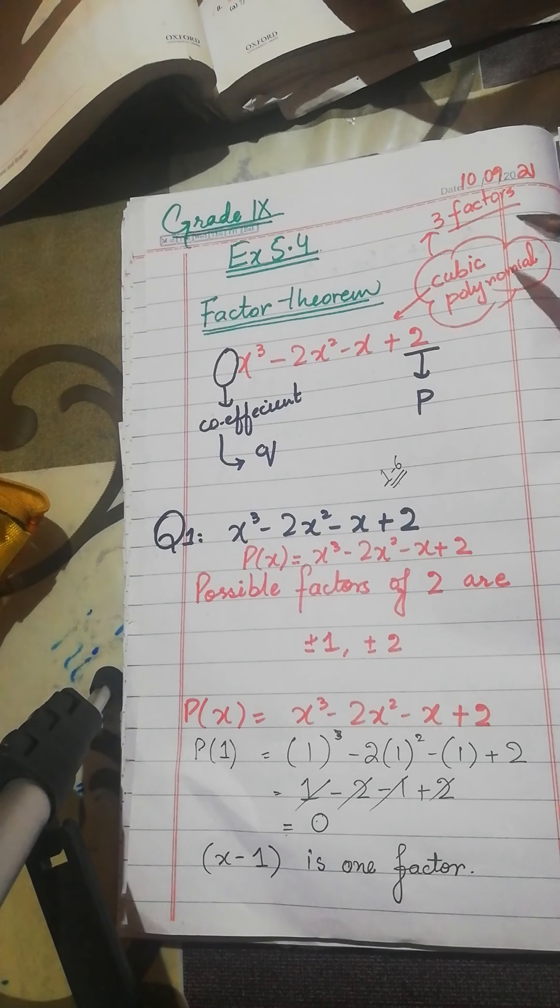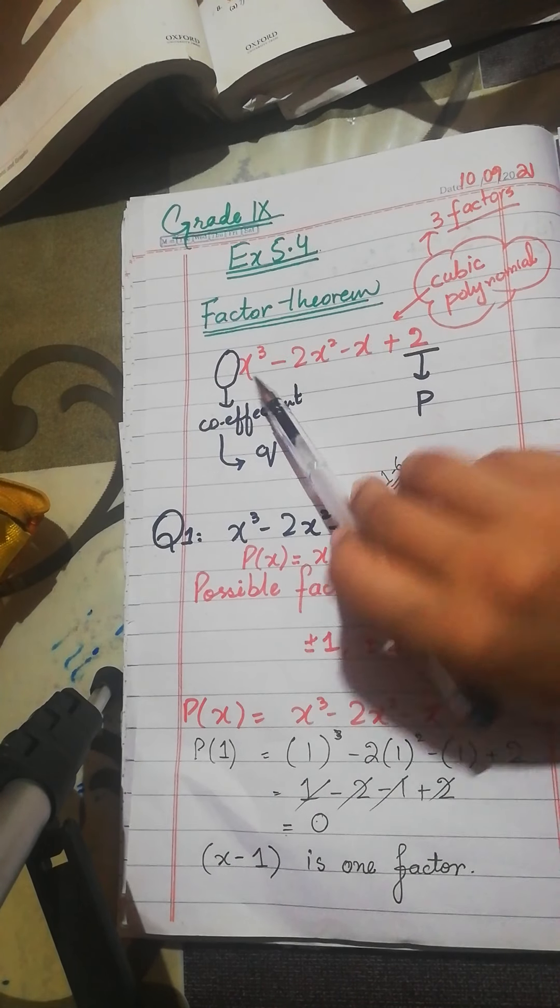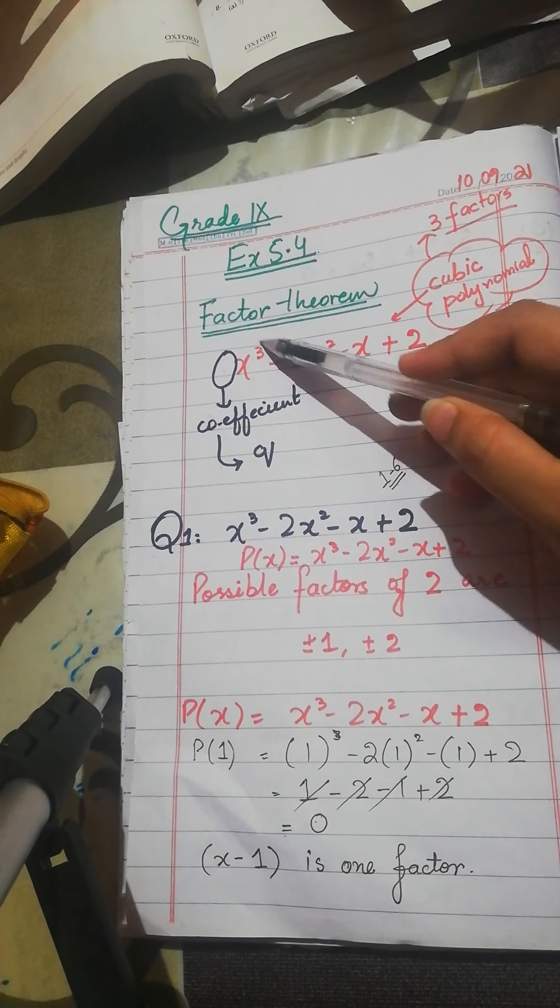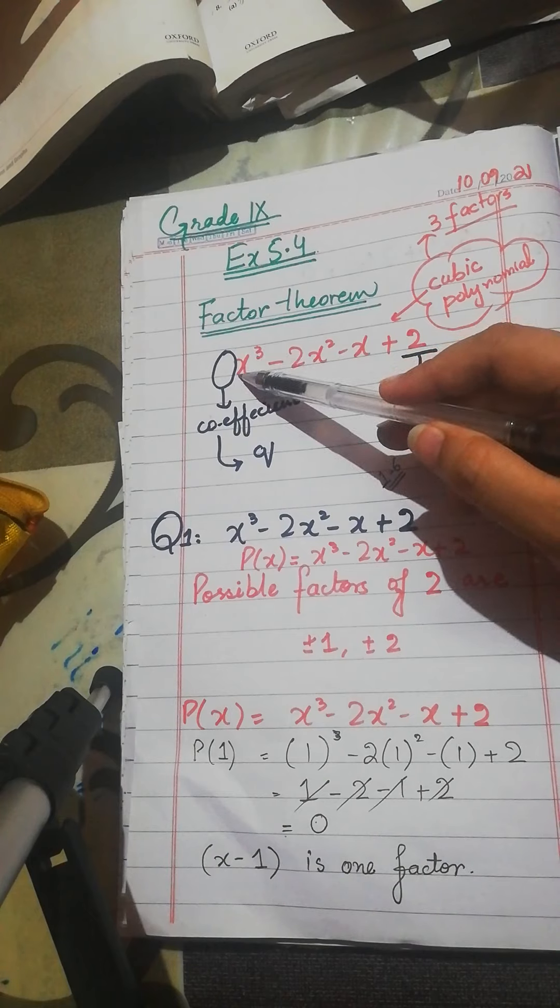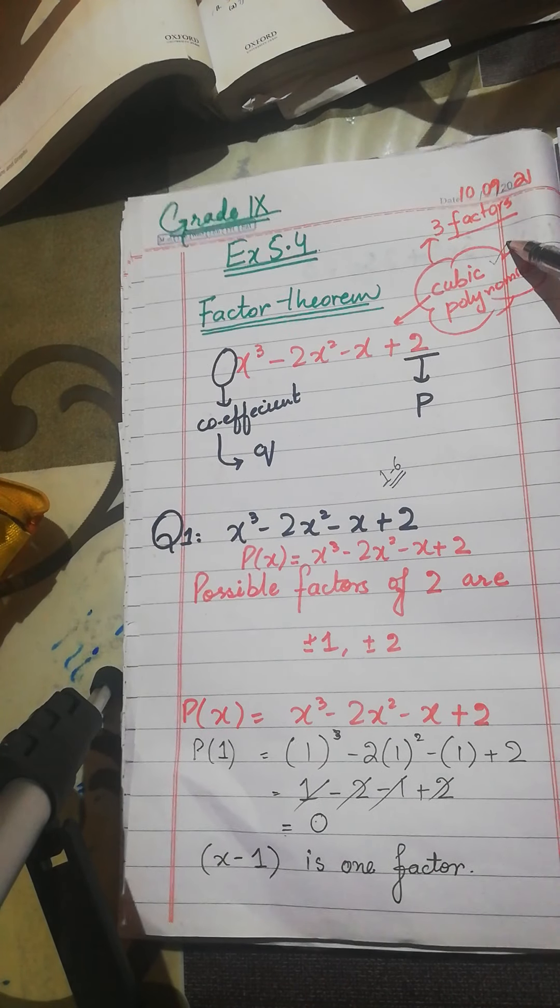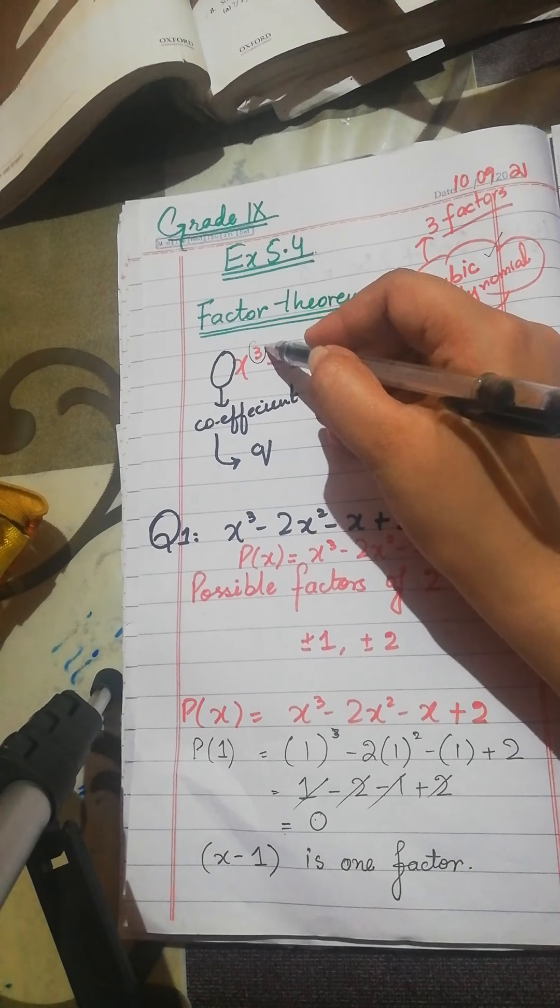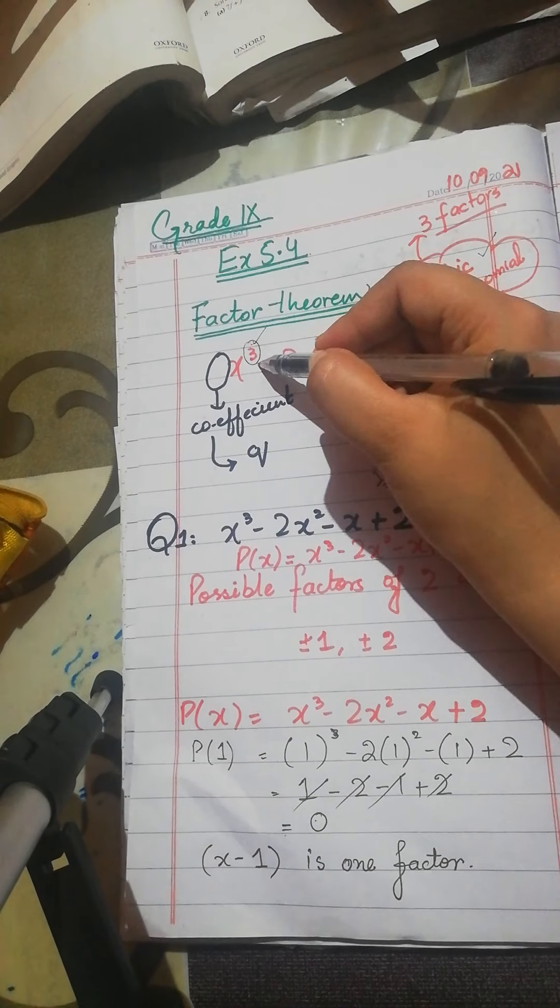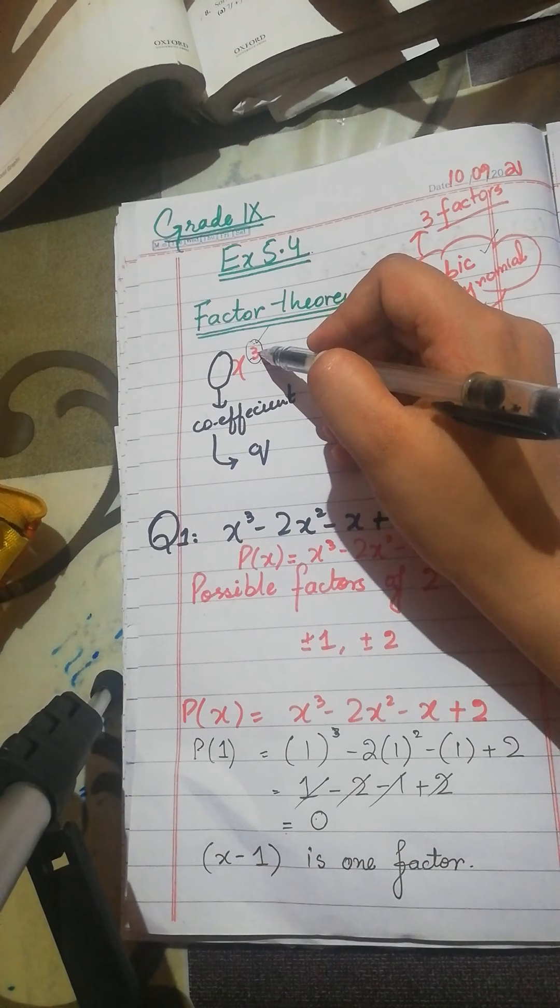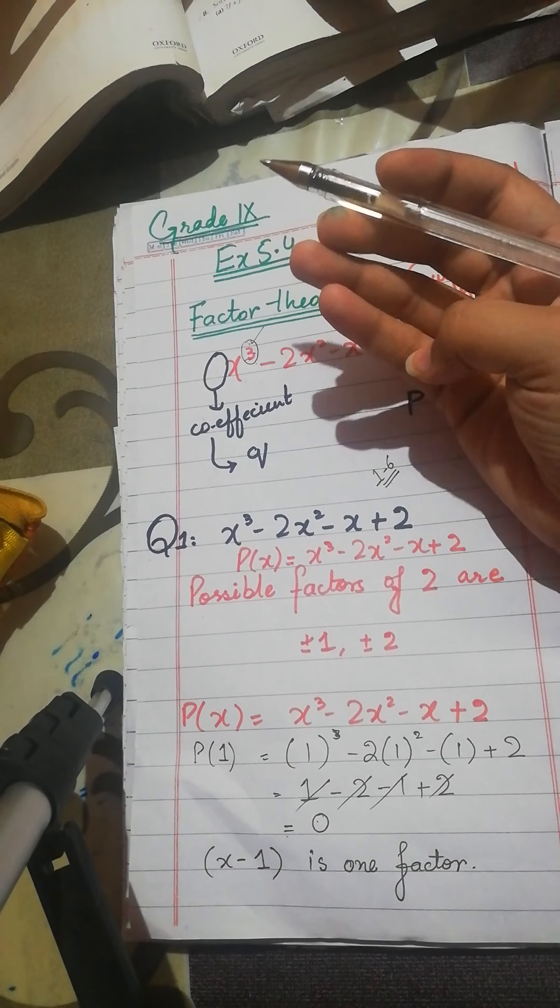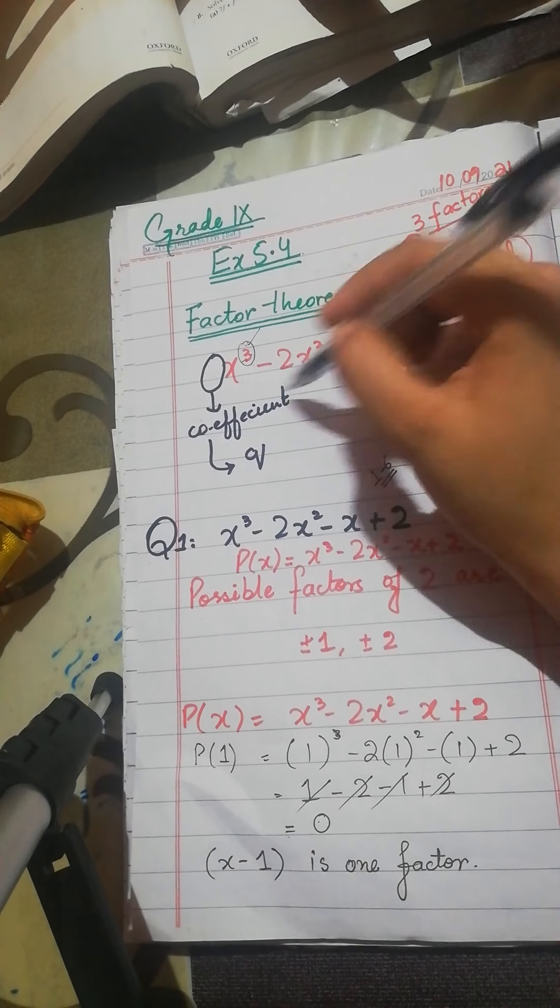In factor theorem, you should know that this is a polynomial. You should know the degree of polynomial. The highest power is 3. It means this is a cubic polynomial. Remember that the degree of polynomial will tell you how many factors there will be. Here it is 3, the highest degree. Now remember that you will find 3 factors in this polynomial.